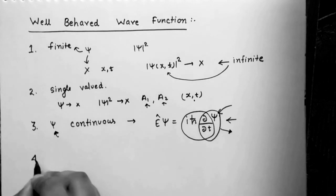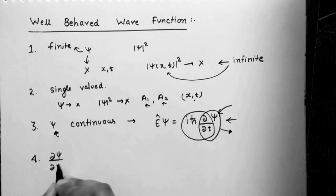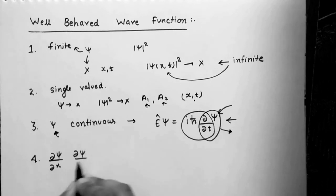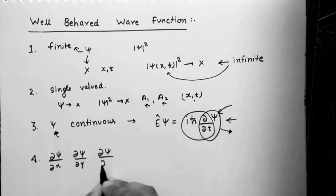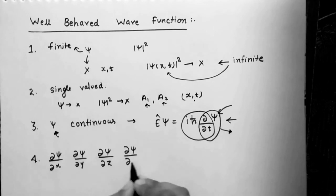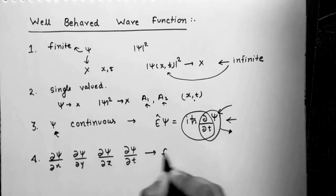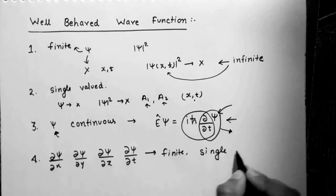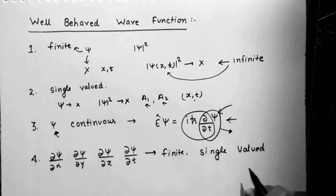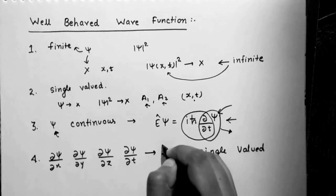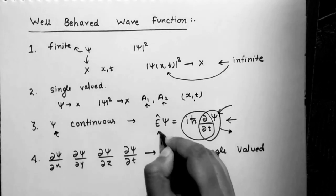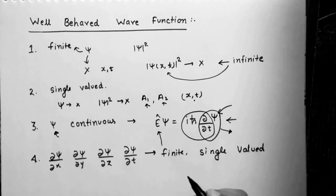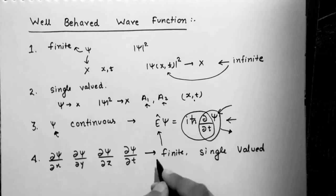The fourth condition is that ∂ψ/∂x, ∂ψ/∂y, ∂ψ/∂z, and ∂ψ/∂t must be finite and single-valued in all space. If they are finite and single-valued, then we can calculate physical observable quantities like energy, momentum, kinetic energy, potential energy, velocity, and many others. So this condition must be imposed on the first derivatives.